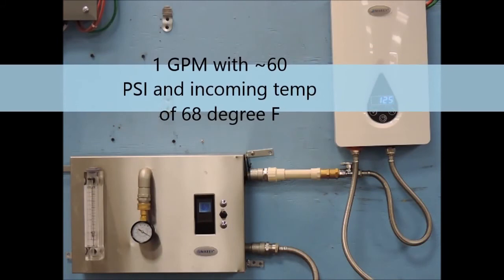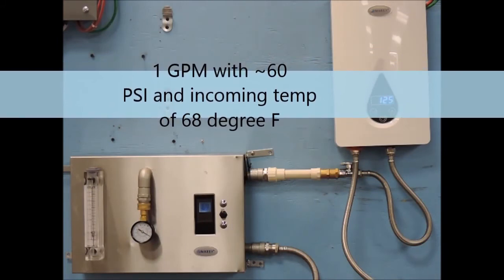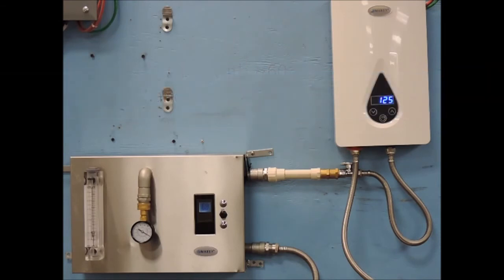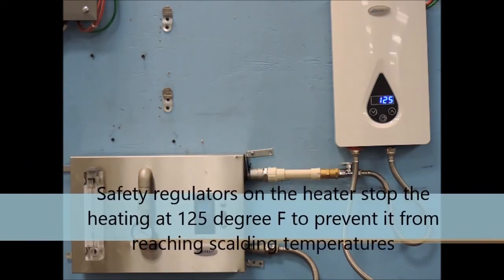Next, we bring the flow rate down to a gallon per minute, still with a psi of 60 and an incoming water temperature of 68 degrees. With these inputs, we are hitting the maximum set point for this unit, which is 125 degrees.